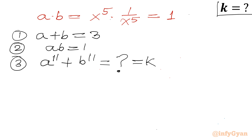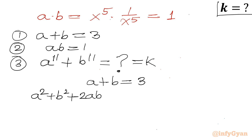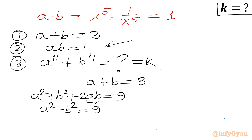Now I will consider our first equation a plus b equal to 3, and square both sides. So a square plus b square plus 2ab equal to 9. Applying ab equal to 1, we get a square plus b square equal to 9 minus 2, which is 7.